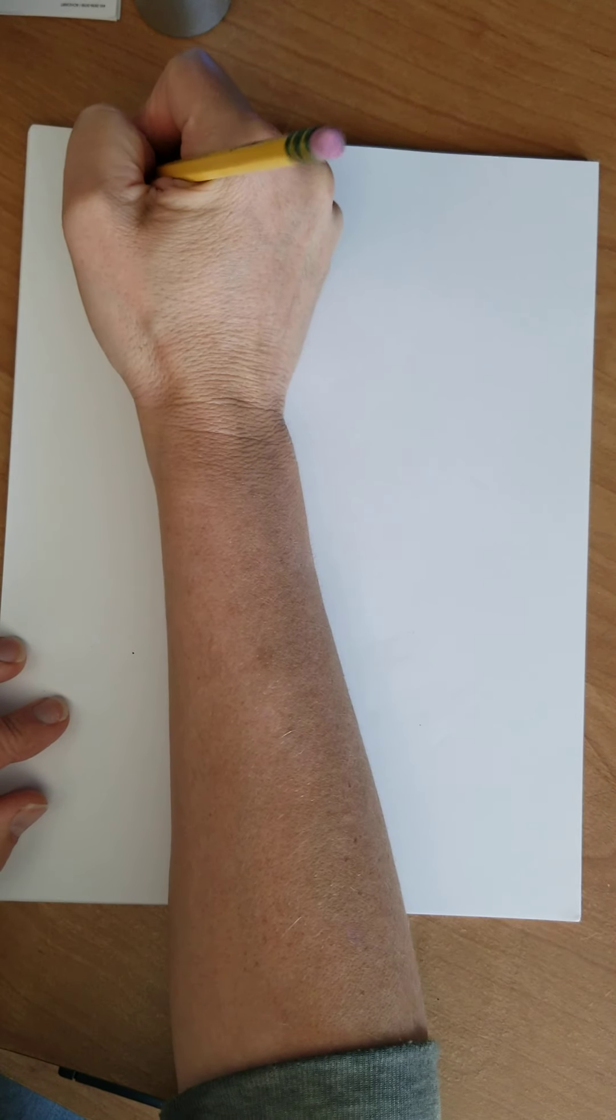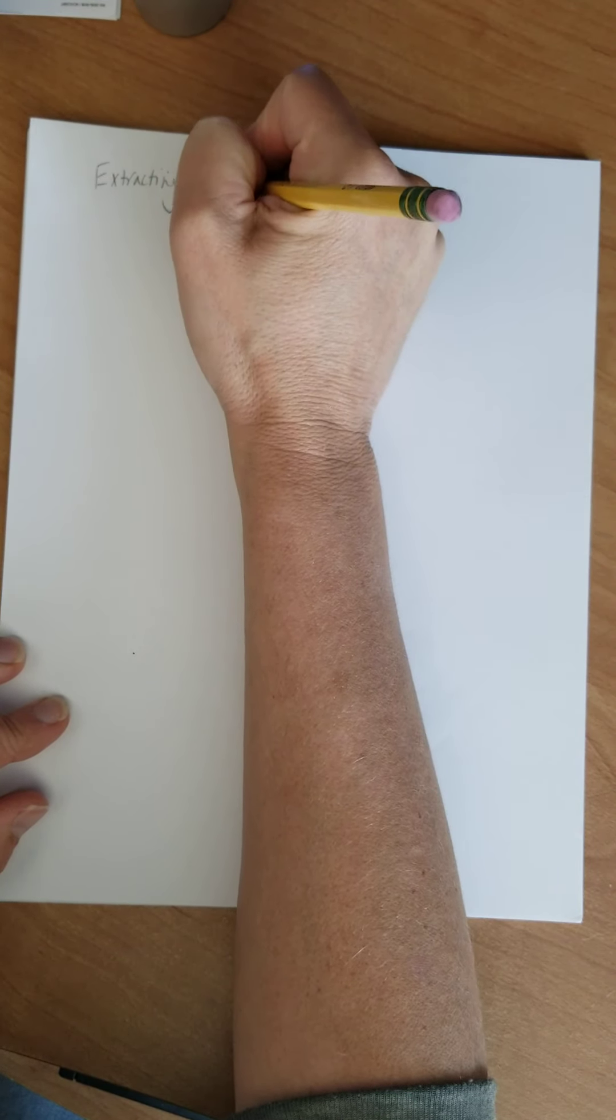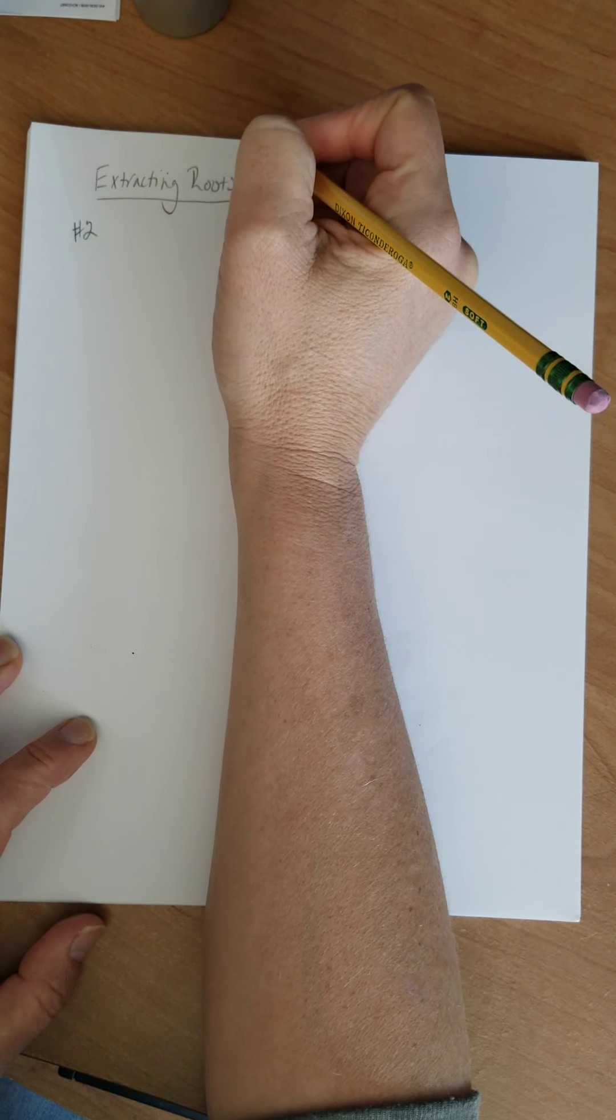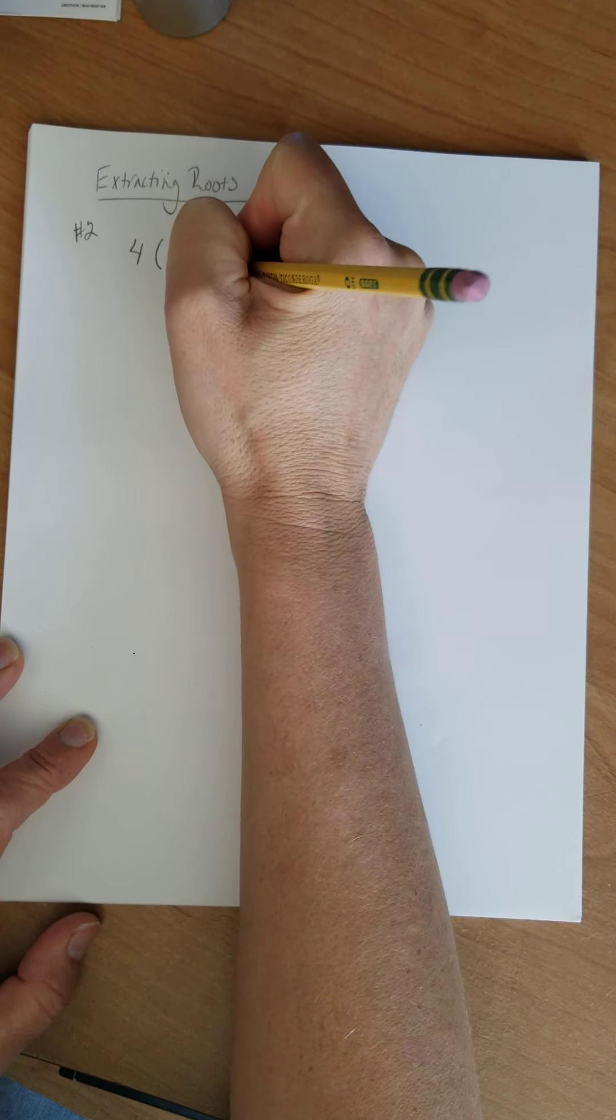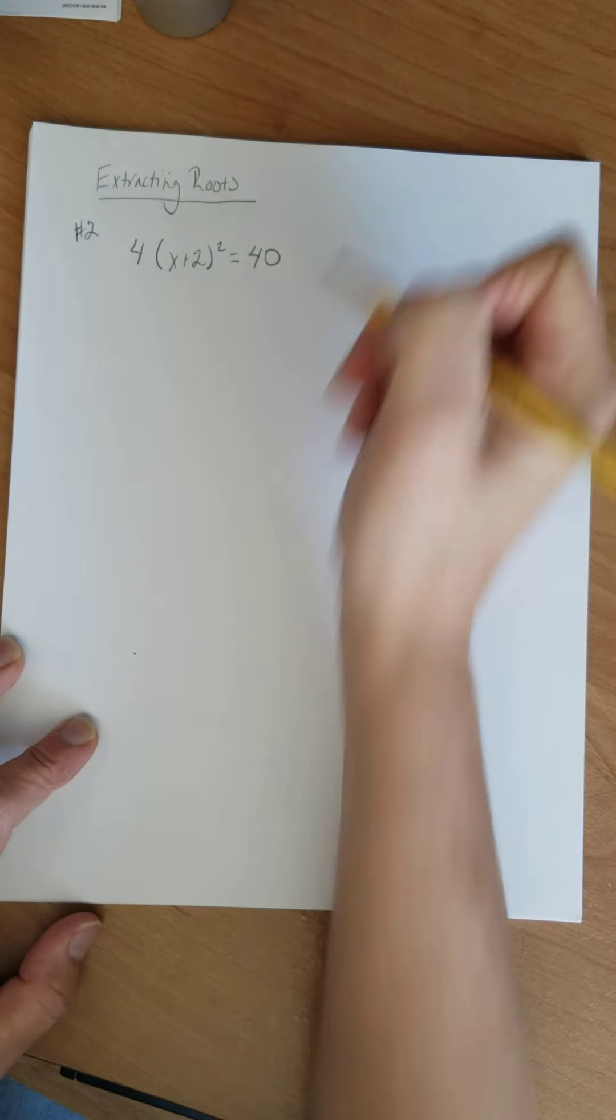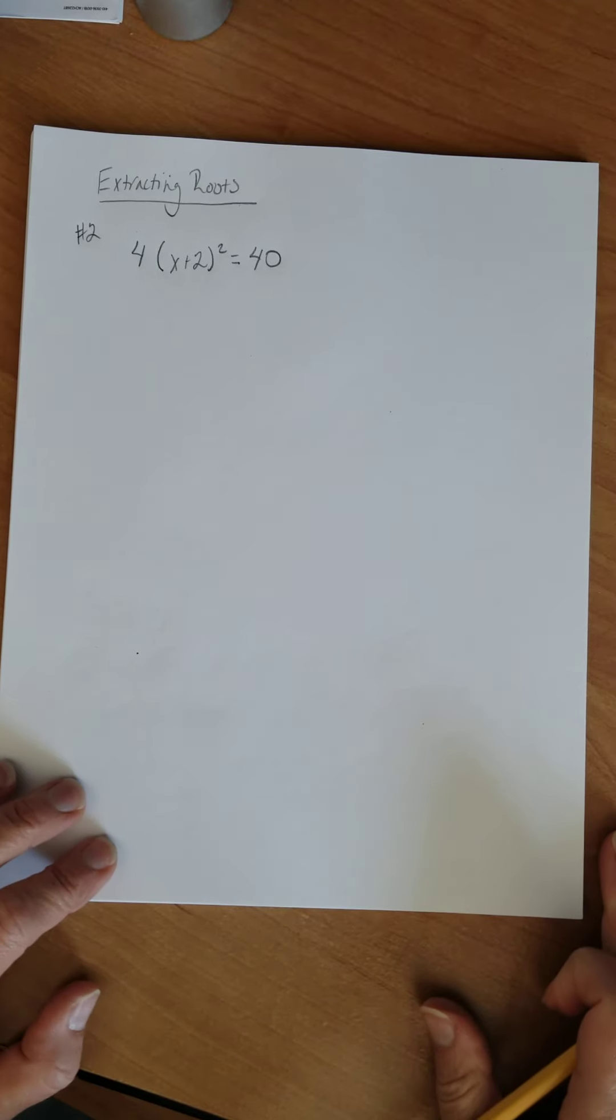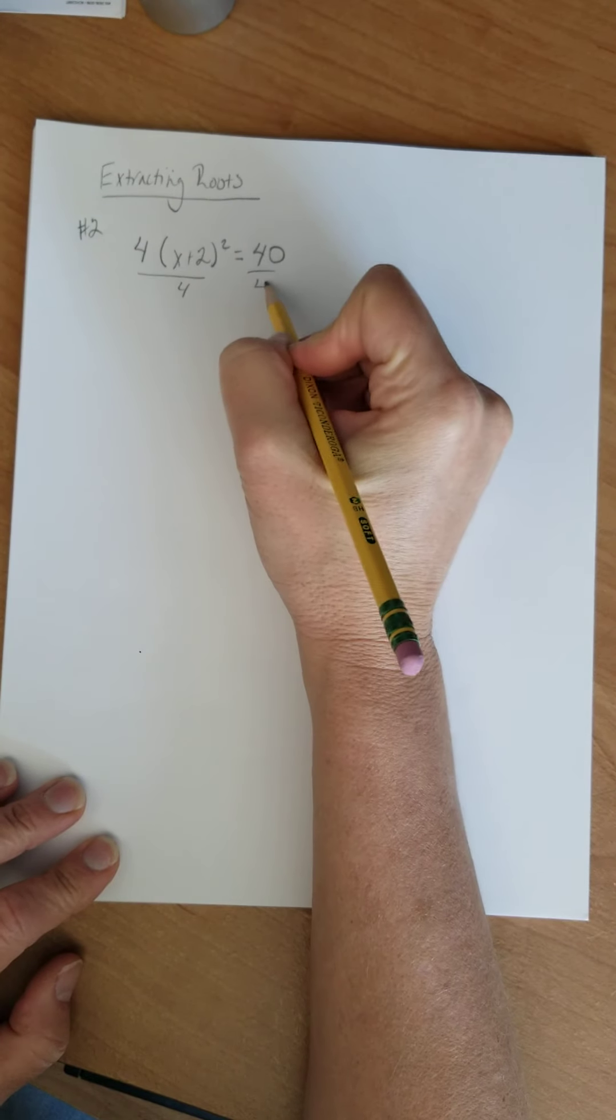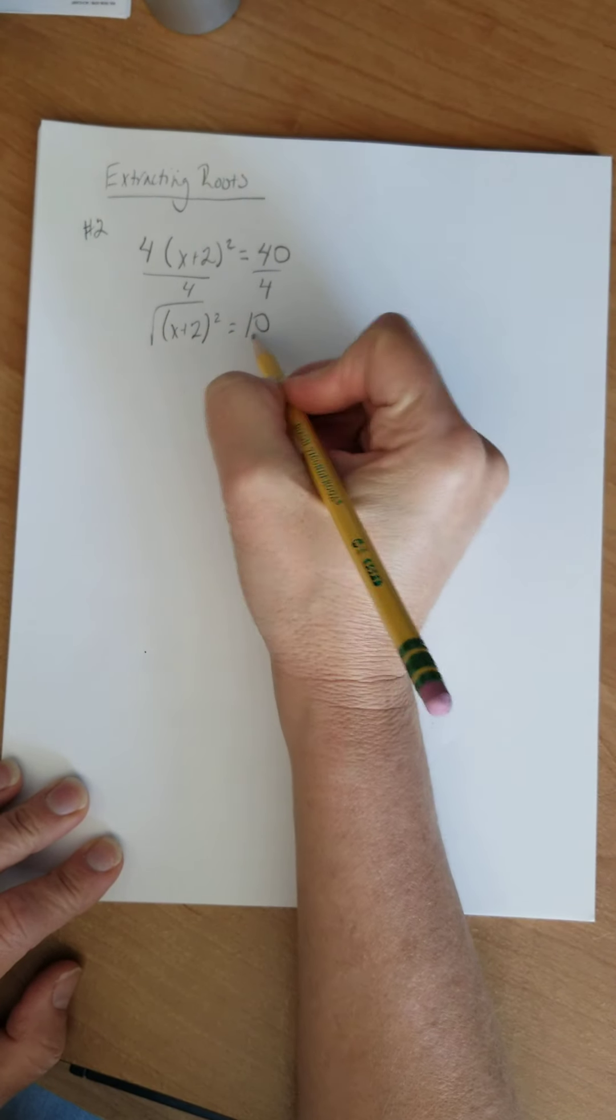The second one is going to be extracting roots. All right. So extracting roots. This is my second problem of the day. So let's look at 4 times the quantity x plus 2 squared. That equals 40. All right. Extracting roots just means we want to end up taking the square root of both sides. So the first thing I'm going to do, I want to get the square by itself so I can actually square root. Let's divide by 4.